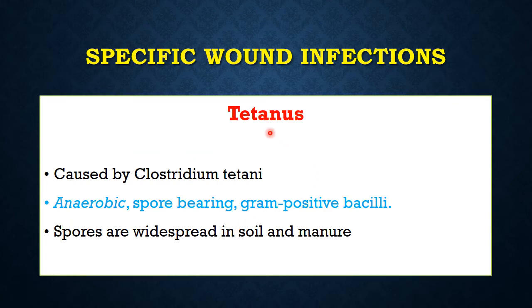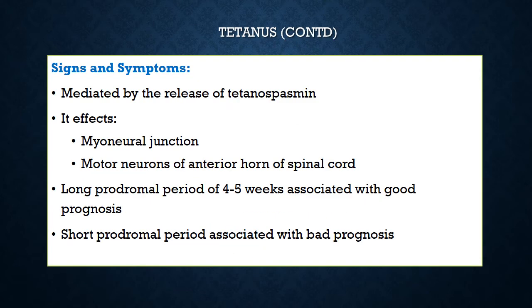Another specific wound infection important in practice is tetanus, caused by Clostridium tetani — anaerobic, spore-bearing, gram-positive bacilli whose spores are widespread in soil and manure. The spores are problematic in both gas gangrene and tetanus because they make the bacteria very hardy, difficult to eradicate, and able to survive for long periods in soil and manure.